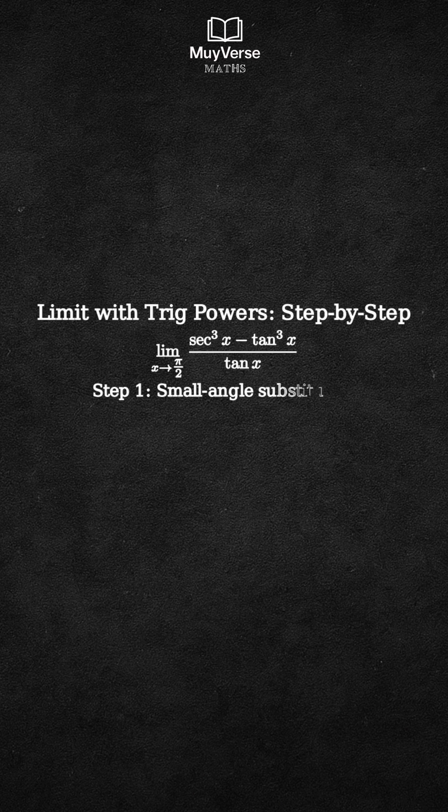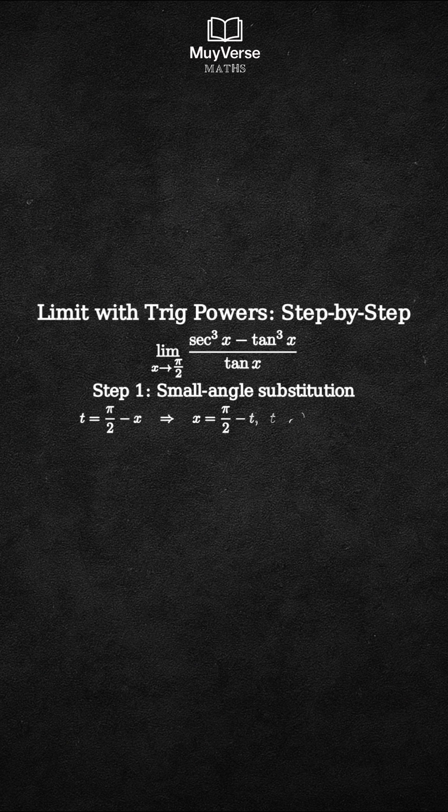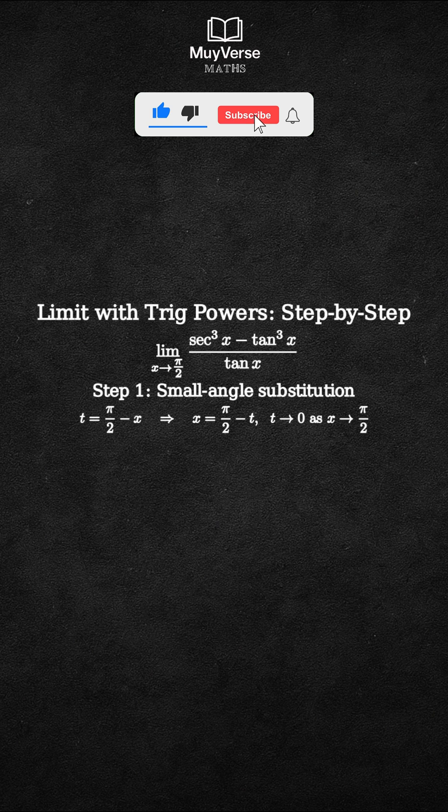Step 1: Use a small angle substitution. Let t equal π/2 minus x. Then as x goes to π/2, t goes to 0. We have x equals π/2 minus t.